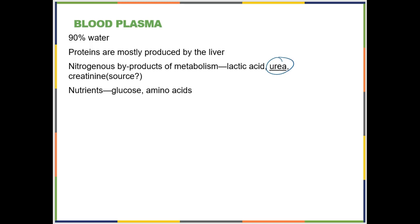Any protein that you eat gets broken down into individual amino acids. Some of those amino acids your body uses to make its own proteins, but if you eat more protein than you need, you end up burning the amino acids for energy the same way you might burn glucose. But nitrogen doesn't fit into any of the cellular respiration biochemical pathways. So before an amino acid can be turned into CO2 and ATP, it has to be deaminated — that nitrogen-containing amine group has to be removed — and that's why you have urea, this nitrogenous waste product.